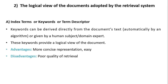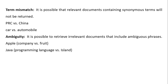For the logical view of documents adopted by the retrieval system, there are various types. First, index terms or keyword/term descriptors: keywords can be derived directly from the document text, automatically by an algorithm, or by a human expert. These keywords represent the document for indexing purposes. The advantage is a concise representation that is easy to process. A disadvantage is poor quality of retrieval due to term mismatch — relevant documents containing synonym terms will not be retrieved.